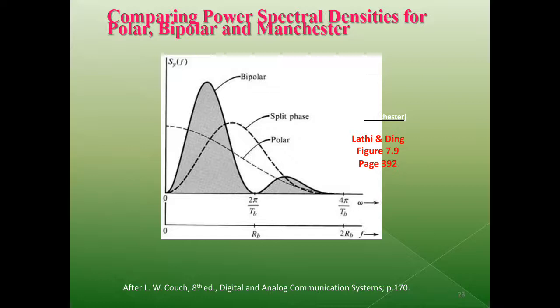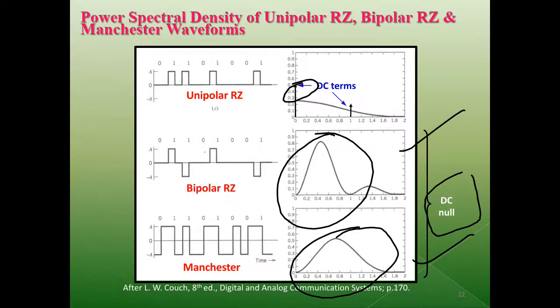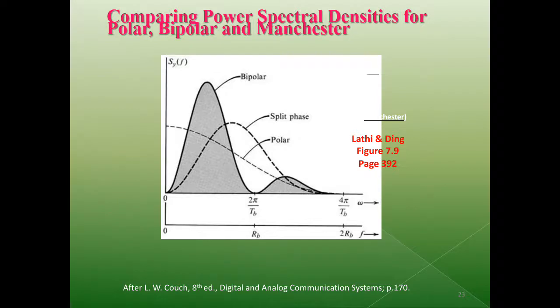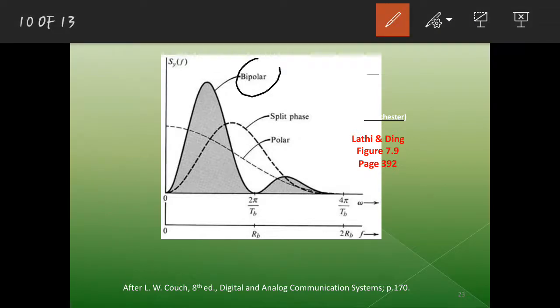You have bipolar signal sinc, you have Manchester here split phase, you have polar. All four things have been defined in terms of NRZ calculation and RZ calculation.